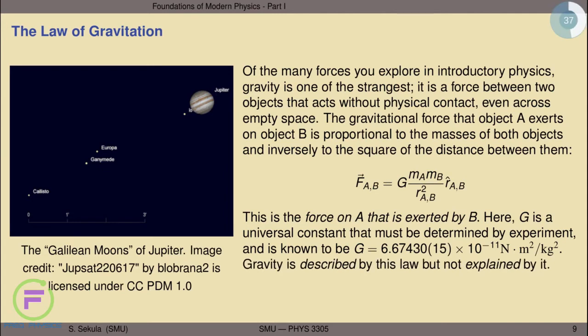Gravity's force law doesn't really tell us its origin — it's very descriptive but by no means explanatory. It tells you what direction it points and how it varies with distance, but doesn't explain where gravity actually comes from. Even Isaac Newton recognized this, and because he could provide no evidence to explain the origin of gravity, he preferred not to speculate, leaving it open for those who would come after him. Its resolution would be left until the modern era of physics.